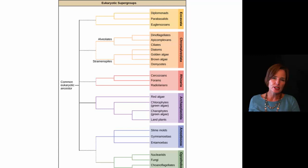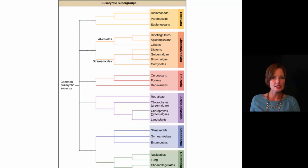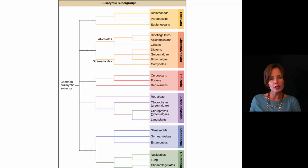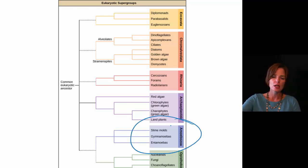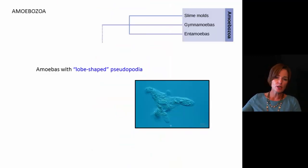Here we have another look at protist diversity. We're going to talk about just some of the protists that have the greatest significance to us as humans in the field of microbiology. We're going to start off with the amoebozoa group and talk about its characteristics. Amoebozoas would be considered protozoan — so they are animal-like protists.